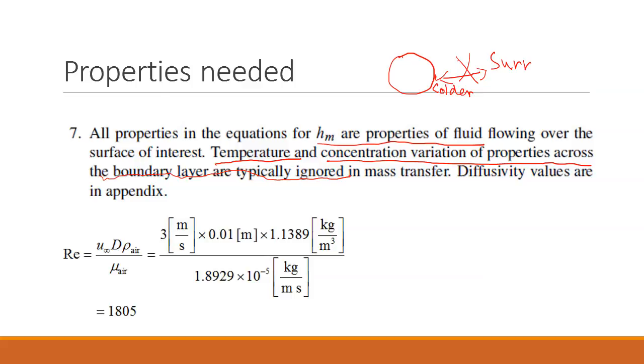So with that, we can calculate Reynolds number. Reynolds number is equal to u infinity, that is given, diameter, that is given. So this is my velocity given, this is the diameter given. And this rho air is something we read for the conditions given from the table in appendix. So this is the unit for density of air. Likewise, we read the viscosity of air, the viscosity of air from the table. So that gives us the Reynolds number of 1805.